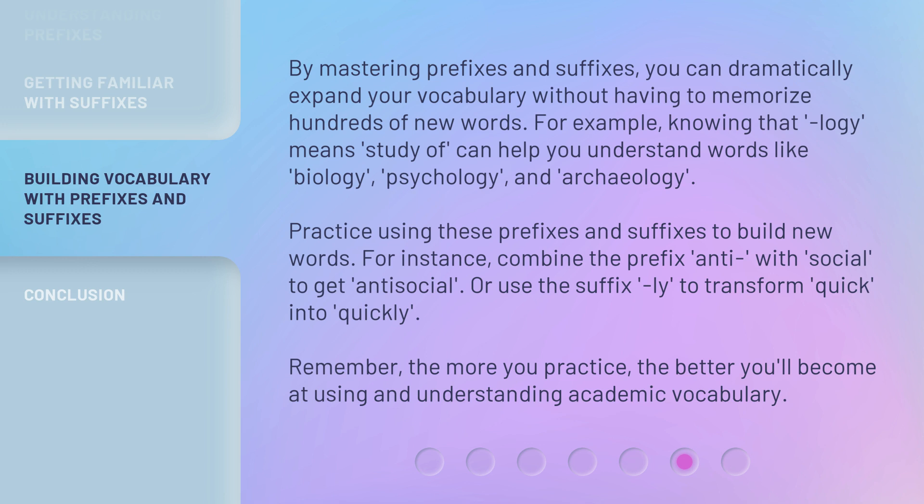Practice using these prefixes and suffixes to build new words. For instance, combine the prefix 'anti-' with 'social' to get 'antisocial.' Or use the suffix '-ly' to transform 'quick' into 'quickly.' Remember, the more you practice, the better you'll become at using and understanding academic vocabulary.